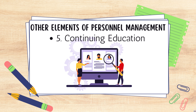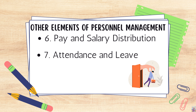Number five is continuing education. This may include offering seminars, learning lunches, or attending professional conferences. Number six is pay and salary distribution, to ensure employee payroll functions correctly. Number seven is attendance and leave — managing personnel also means overseeing time off for sick and personal days.